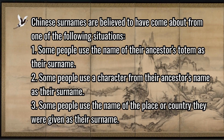Chinese surnames are believed to have come about from one of the following situations: Some people use the name of their ancestor's totem as their surname; some use a character from their ancestor's name; some use the name of the place or country they were given as their surname.